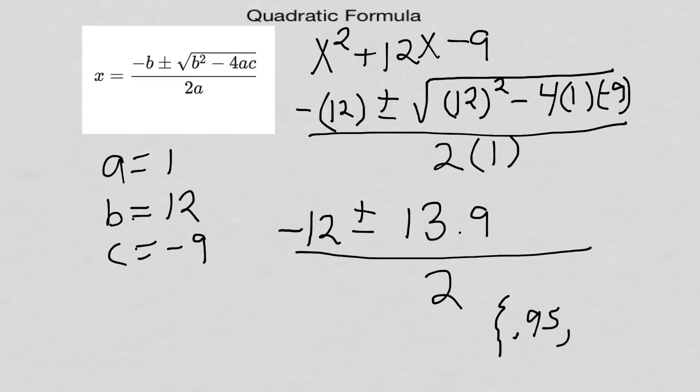Now I'm gonna do the lower half. Negative 12 minus 13.9 divided by 2 is going to give me negative 12.95. So that's my answers there: positive 0.95, negative 12.95.